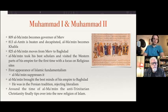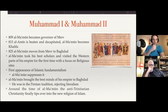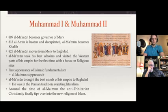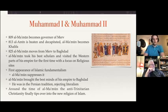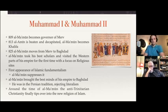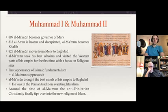In 825, al-Mamun moves from Merv to Baghdad to fill the power vacuum at the center of his empire — a diverse metropolis with Jews, Buddhists, Zoroastrians, and Manichaeans. Al-Mamun took his best scholars and visited the western parts of his empire for the first time, with a focus on religious sites. This was a time when Aramaic was basically a dead language in most of these parts. Al-Mamun renovates the Dome of the Rock and adds diacritics to Abd al-Malik's inscriptions, thereby solidifying the reading of Muhammad as the prophet of Islam.